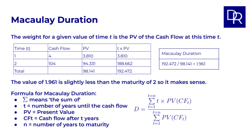But what do we calculate for each value of t? It is the value for t times the present value of the cash flows occurring at time t, and then the sigma sign tells us to add up all these values, which we did to give 192.472. Then in the denominator we again have the sum, now just of the PVs, for which we calculated the sum as 98.141.